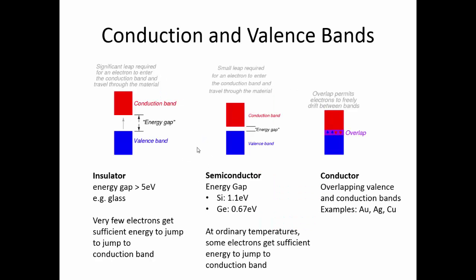This slide shows the difference between insulators, semiconductors, and conductors — specifically the energy gap between the valence band and the conduction band. For a good insulator, that energy gap is large, typically more than 5 electron volts, making it very hard for electrons to reach the conduction band. For semiconductors, the gap is smaller — about 1.1 electron volts for silicon and 0.67 electron volts for germanium — and at ordinary room temperatures, thermal energy is sufficient to get a number of electrons to jump, making semiconductors better conductors than insulators.